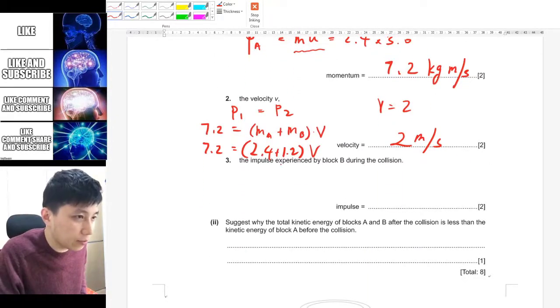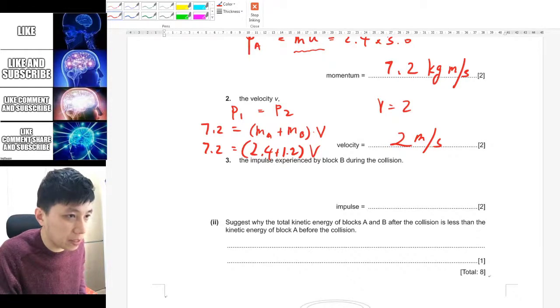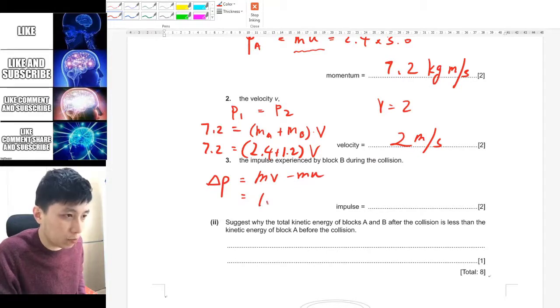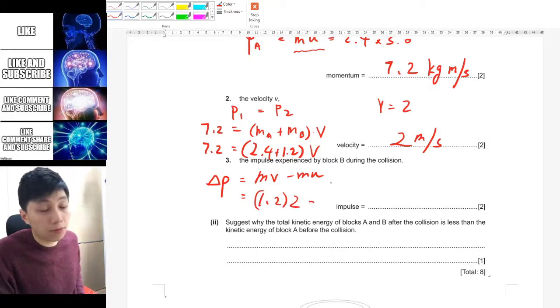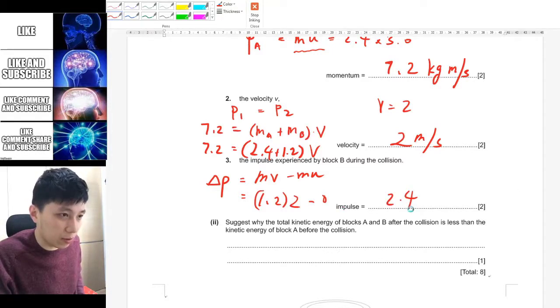Part 3 is asking you the impulse experienced by block B during the collision. So impulse, you can use the symbol delta P, changing momentum, and then mV minus mU. The mass is 1.2, initial velocity is 0. So the answer is simply 2.4 kg m per second.